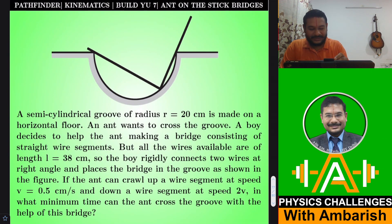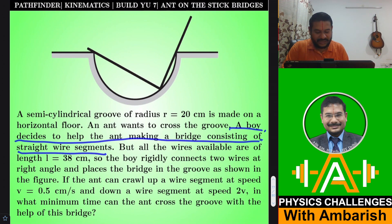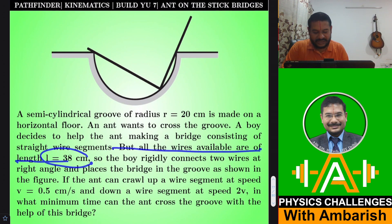Here's the problem. A semi-cylindrical groove of radius r = 20 cm is made on a horizontal floor and an ant wants to cross the groove. Here's the cylindrical groove and an ant has to cross the groove with help of stick bridges. A boy decides to help the ant making a bridge consisting of straight wire segments, but all the wires available are L = 38 cm.